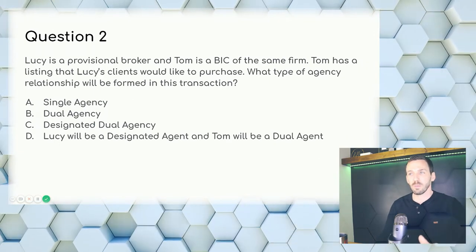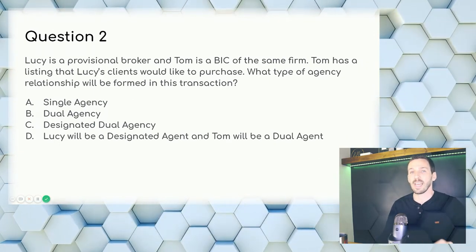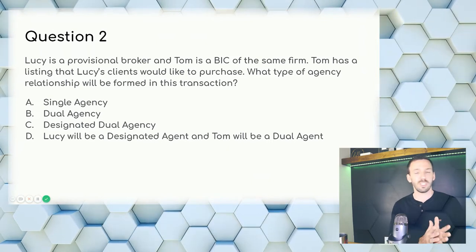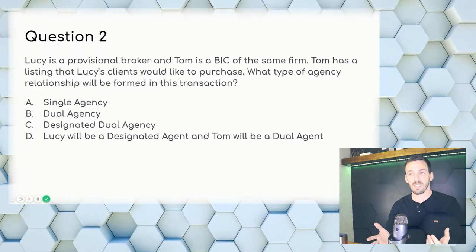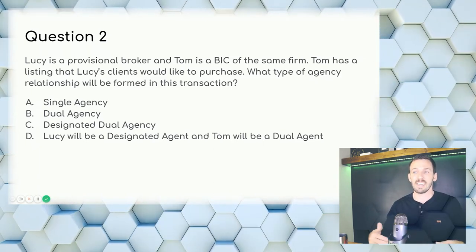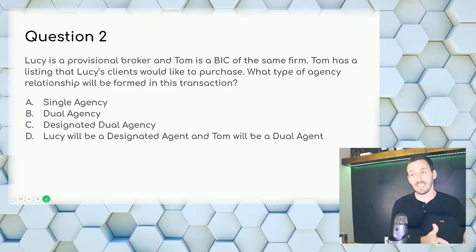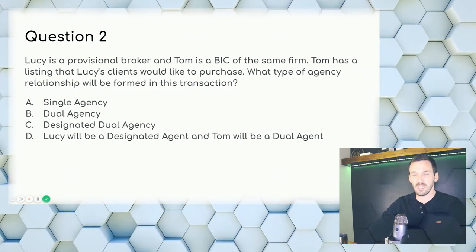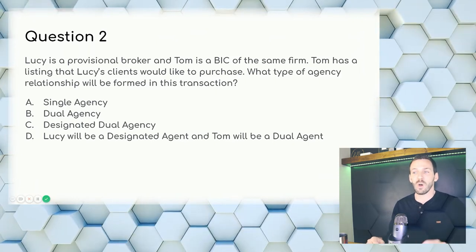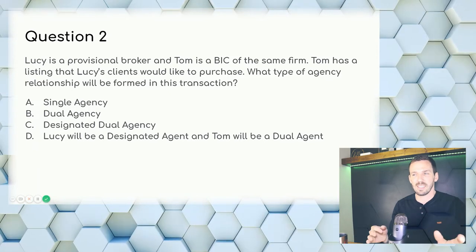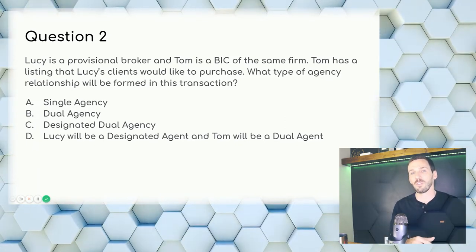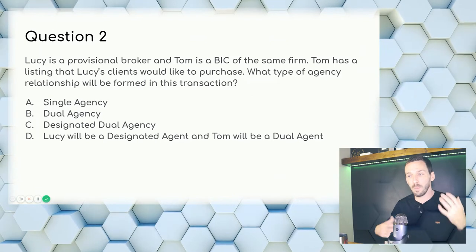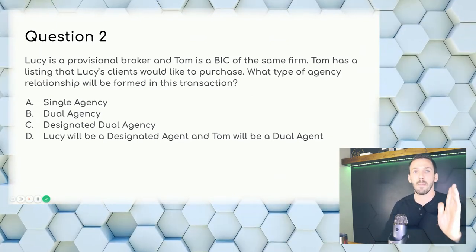Question 2: Lucy is a provisional broker and Tom is the broker in charge at the same firm. Tom has a listing that Lucy's clients would like to purchase. What type of agency relationship is formed? They work at the same firm, so not single agency. It can't be D — you don't have mixed agencies. It can't be designated because a broker in charge overlooks a provisional broker. A BIC supervises the provisional broker and will oversee both clients by default. Answer: dual agency.